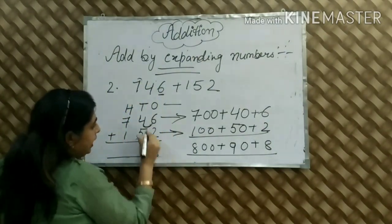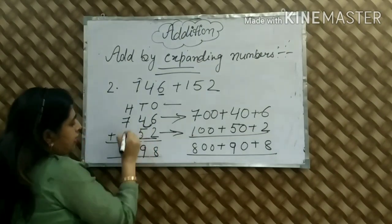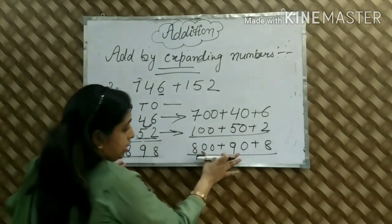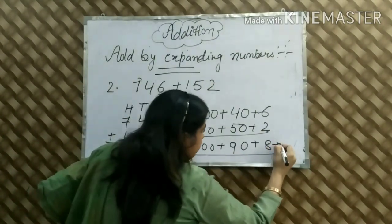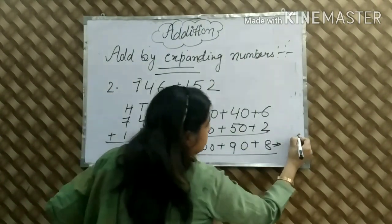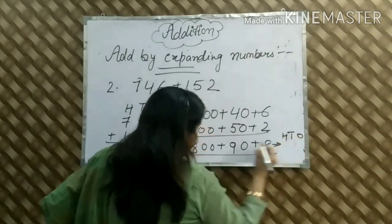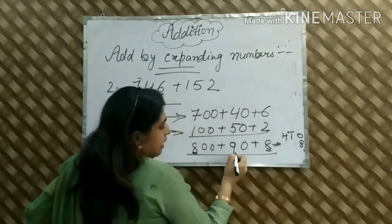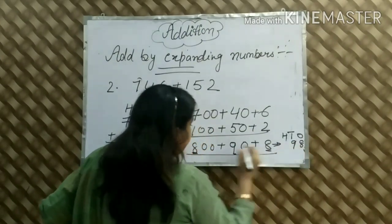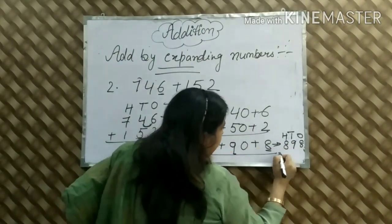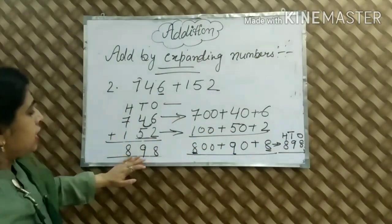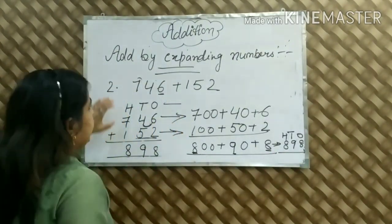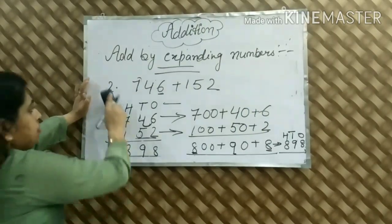To expand: 6 and 2 is 8. Ones place is 8, tens place is 9, hundreds place is 8. The short form is 898. These were the three-digit expanding numbers.